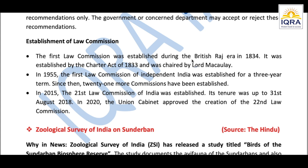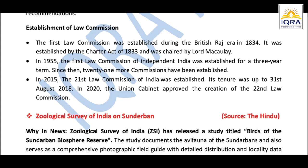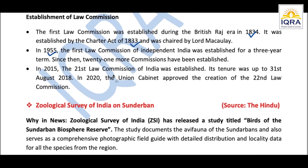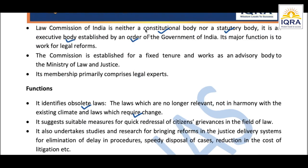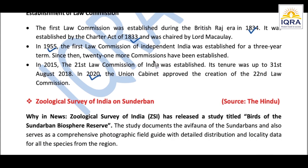Regarding the history of the Law Commission: the first Law Commission was established during the British Raj in 1834 through the Charter Act of 1833. After independence, the first Law Commission was established in 1955. Presently, the 22nd Law Commission is the latest one, established in 2020. Key points for the exam: its status as an executive body, its functions, and a little history about it.